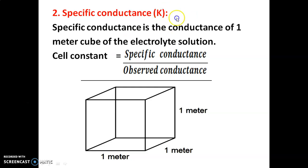The second topic is specific conductance, represented by κ (kappa). Specific conductance is the conductance of one meter cube of the electrolyte solution — that is, in a 1 m × 1 m × 1 m cube. The conductance produced in one meter cube of the electrolyte solution is called specific conductance.